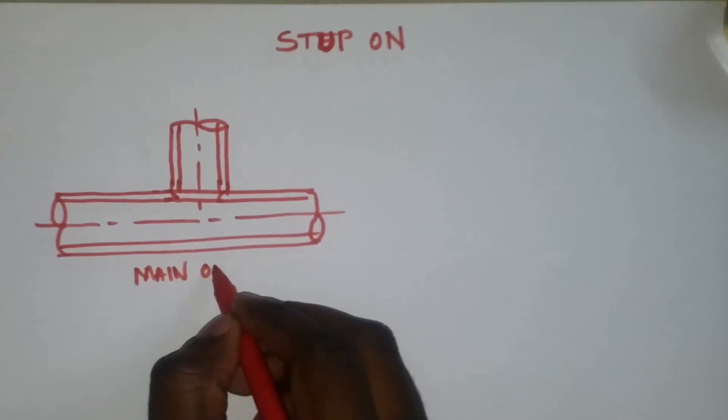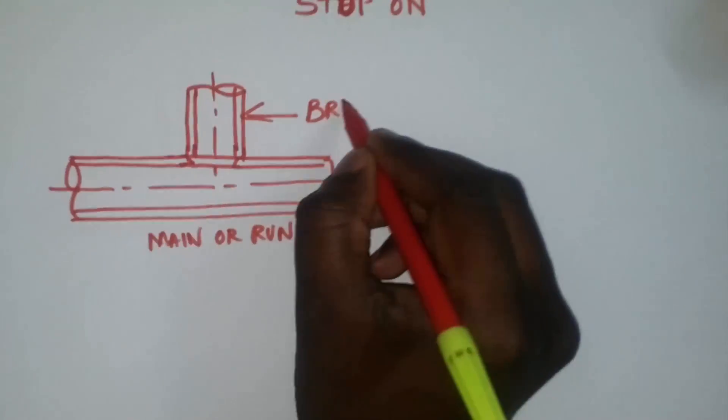Stub on is to be used when the branch is equal to or one size smaller than the main pipe.